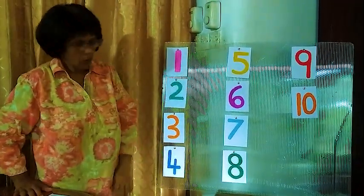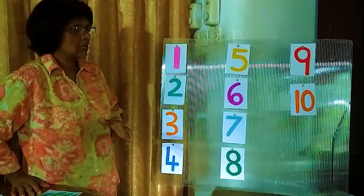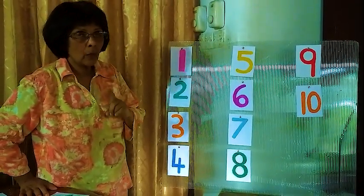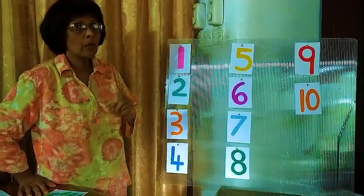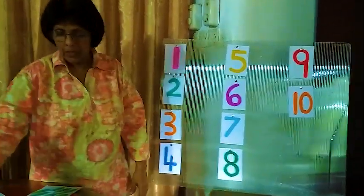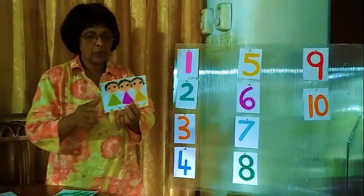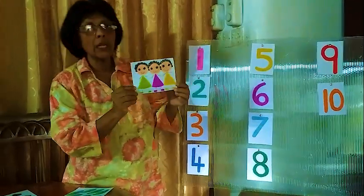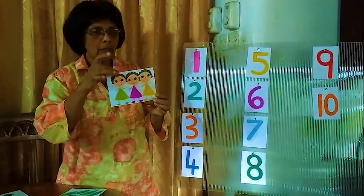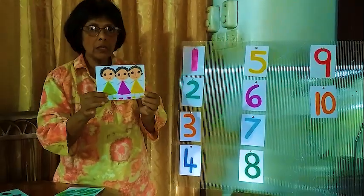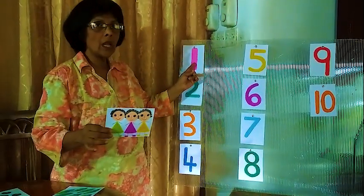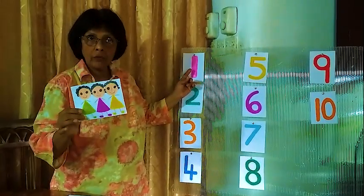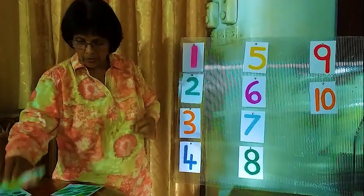Now we have to find the first number, which is 1. We have to find the value of number 1. Now in this picture, how many girls are here? 1, 2, 3 — 3 girls. Is this number 3? No. This is not number 3. We have to find 1 picture.